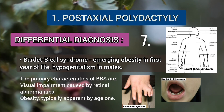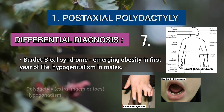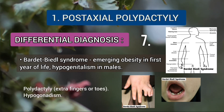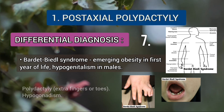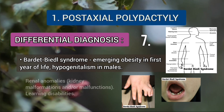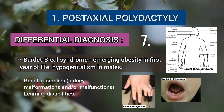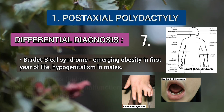The primary characteristics of Bardet-Biedl syndrome include visual impairment caused by retinal abnormalities, obesity, polydactyly, hypogonadism, renal abnormalities due to kidney malfunction or malformation, and learning disabilities.